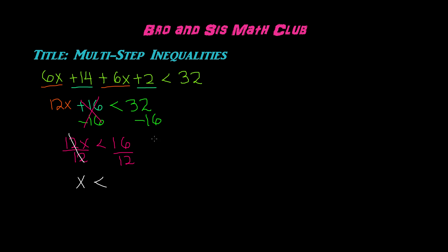Now 16 over 12 can be further reduced. We know that 16 and 12 are both divisible by the number 4. So if you divide 16 by 4 and 12 by 4, you get 4 over 3. So the solution to this multi-step inequality is 4 over 3, or 4 thirds.